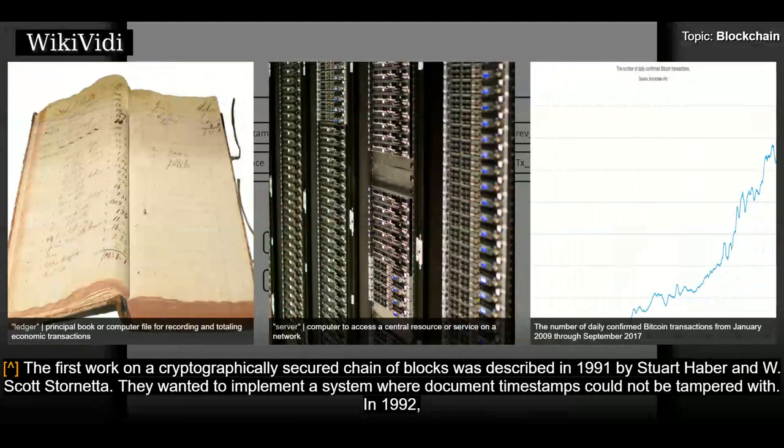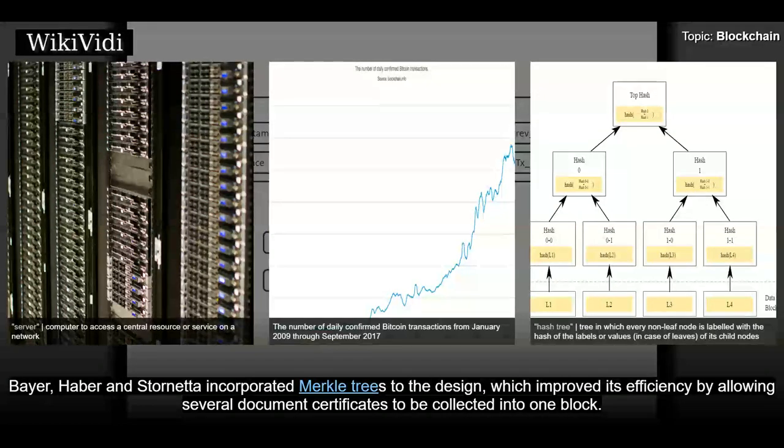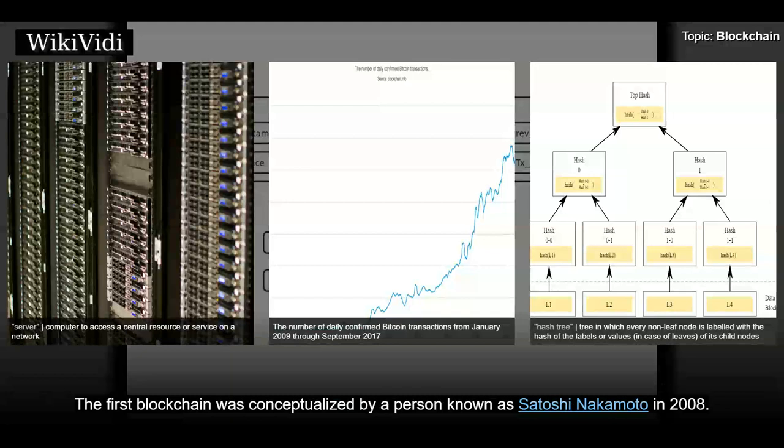The first work on a cryptographically secured chain of blocks was described in 1991 by Stuart Harbour and W. Scott Stornetta. They wanted to implement a system where document timestamps could not be tampered with. In 1992, Bayer, Harbour and Stornetta incorporated Merkle trees to the design, which improved its efficiency by allowing several document certificates to be collected into one block.